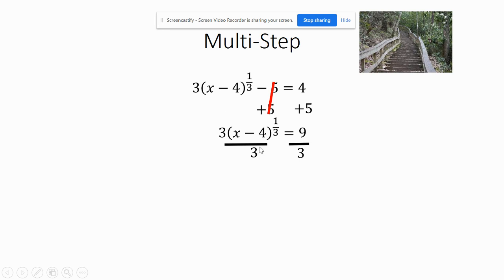9 divided by 3 is 3. But now I have this cube root here of the quantity x minus 4 to the 1/3 power. To undo the 1/3 power, I would cube it. And if I cube the left, I got to cube the right.